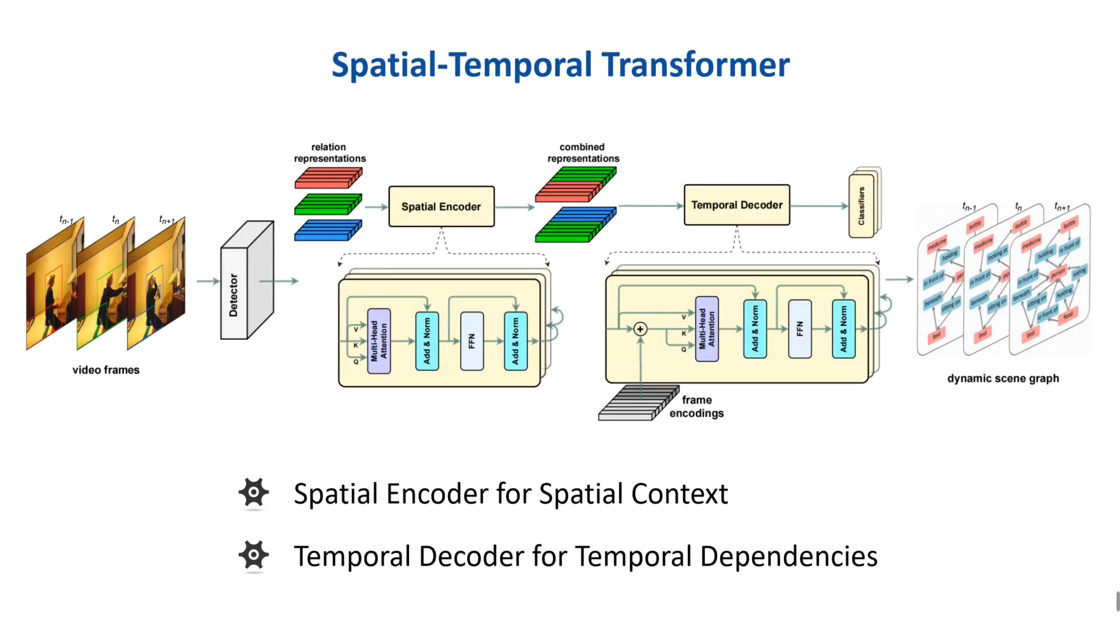To fill this gap, we propose the Spatial Temporal Transformer for dynamic scene graph generation that consists of two modules. A spatial encoder that takes an input frame to extract spatial context and reason about the visual relationships within a frame.